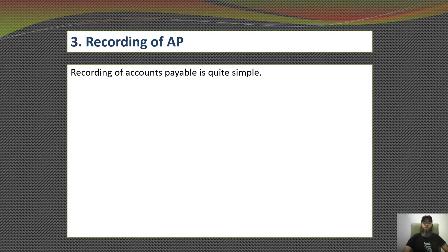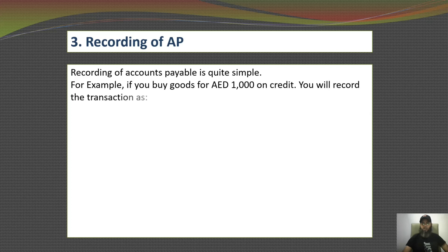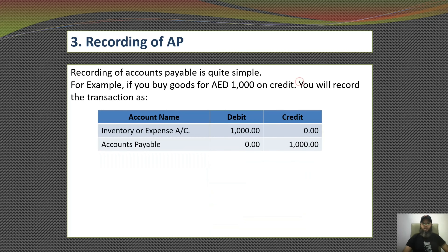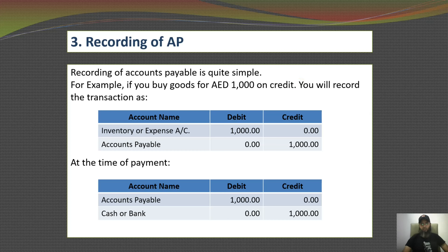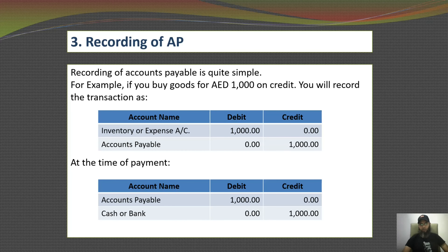Recording accounts payable is quite simple. For example, if you have purchased goods for 1,000 dirham on credit, you will debit inventory or expense account for 1,000 and credit accounts payable for 1,000, creating your liability. At the time of payment, you will debit accounts payable and credit cash or bank with 1,000, whichever you used to pay the supplier.